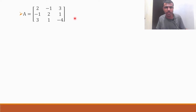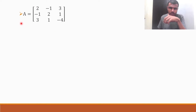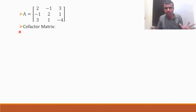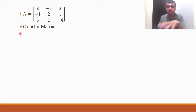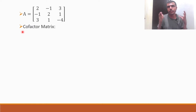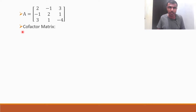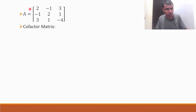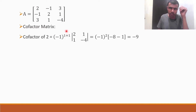Now we have to find out something known as the cofactor matrix for the given matrix A. We are going to find out the cofactor for each element in A. Basically there are nine elements, so first let's find out the cofactor of 2.